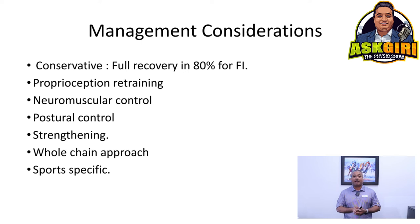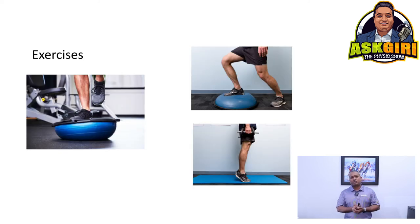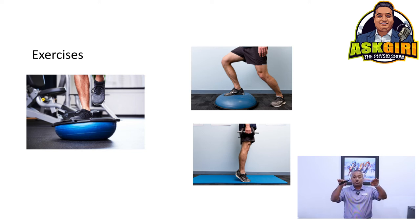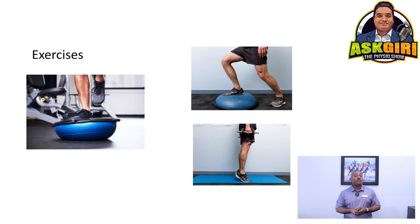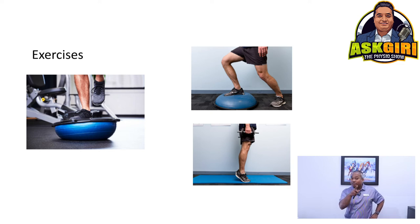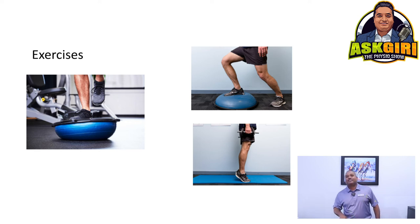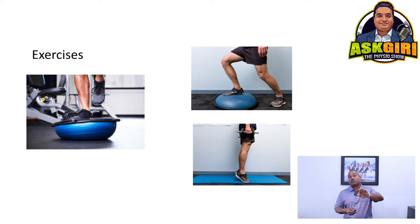Sample exercises include reverse BOSU marching, reverse BOSU squats, BOSU lunges — forward, side, and backward — and heel raises with or without weights. You can screen your own ankle stability: hands on waist, stand on one leg safely. Check if your ankle is stable or wobbling, and whether your hips are dropping. Another way to check is a squat — limited squat range indicates ankle dorsiflexion needs work.